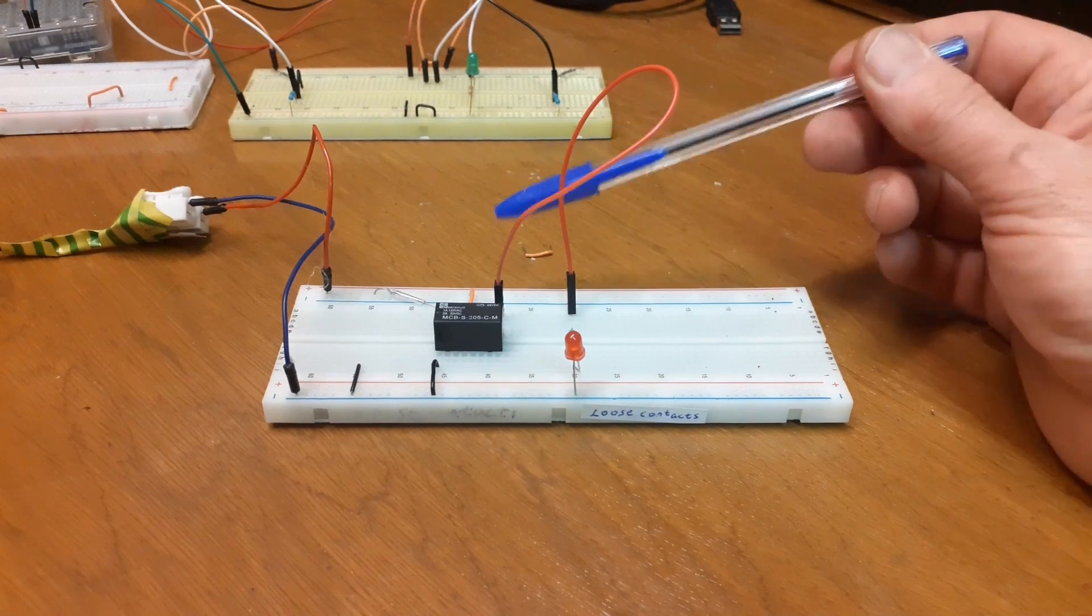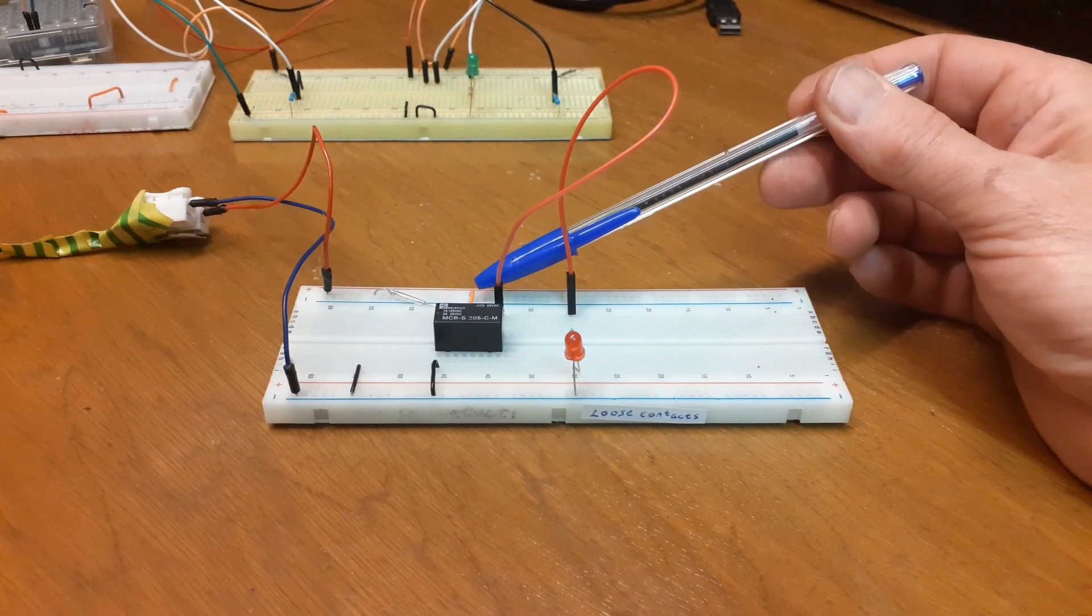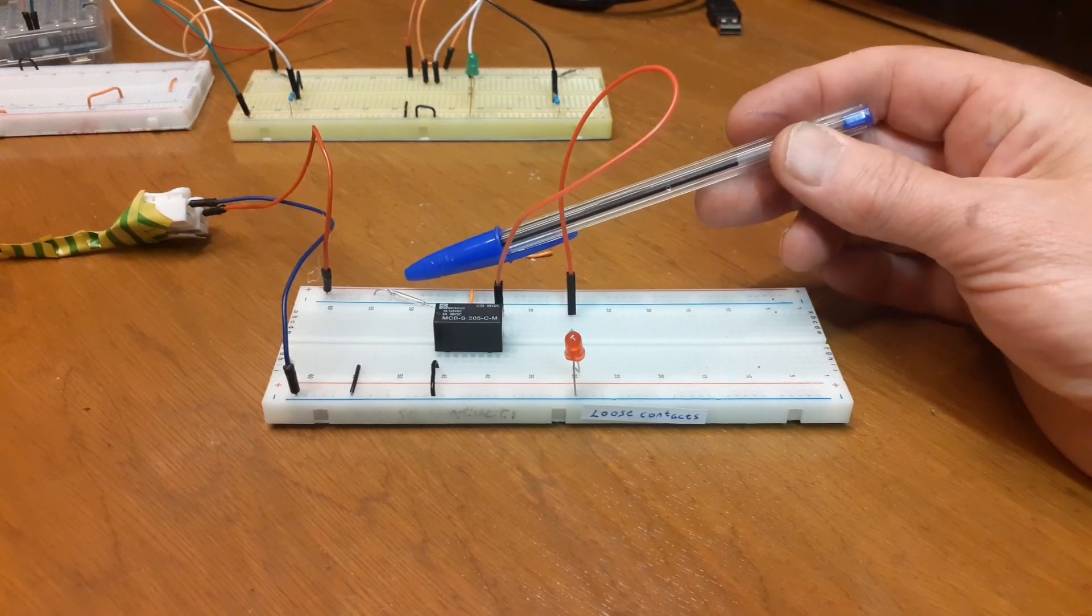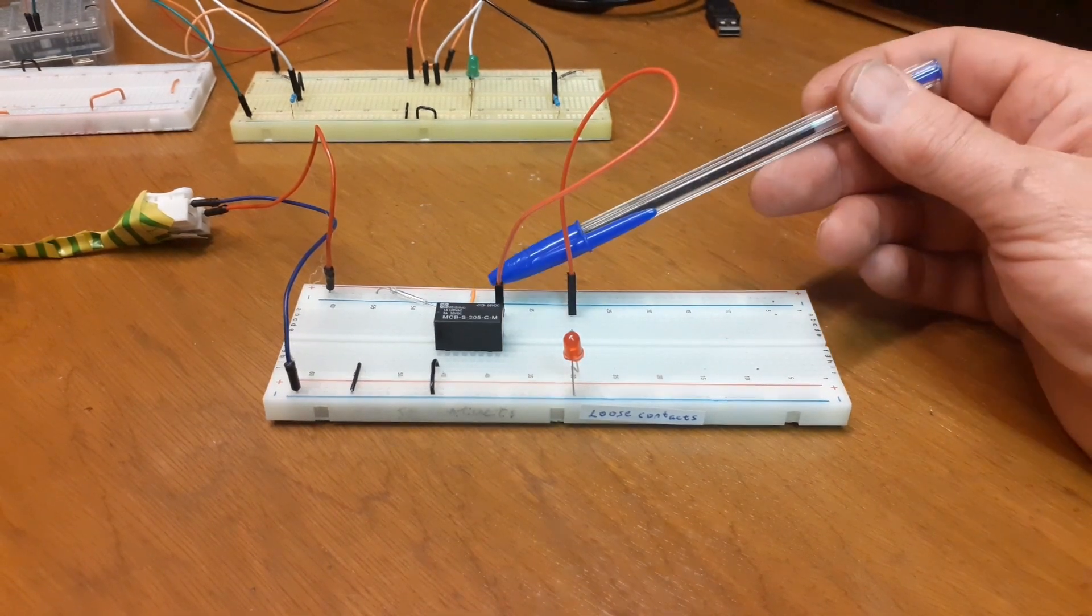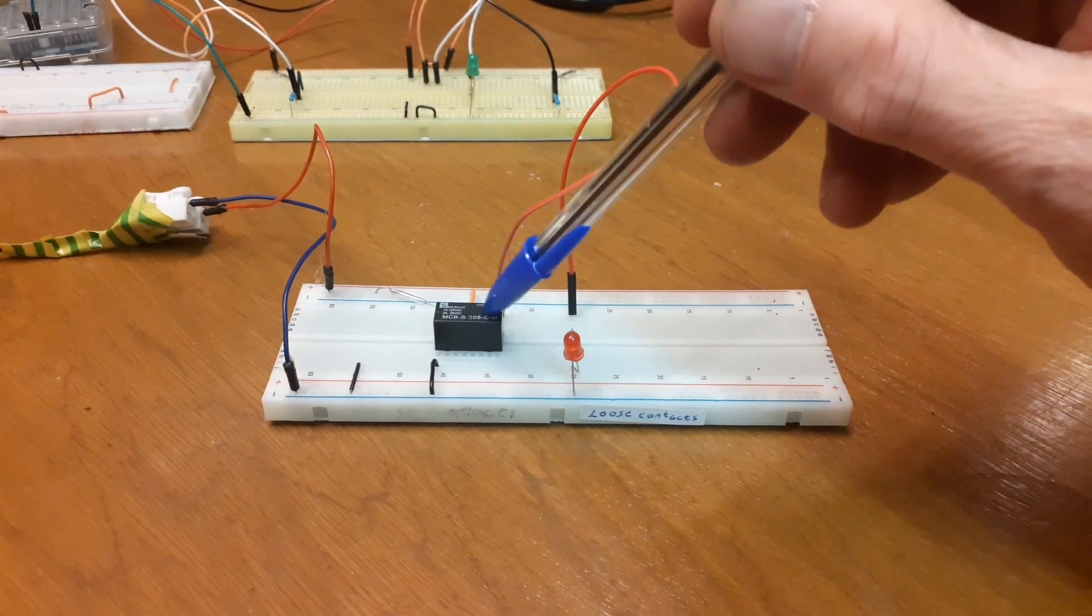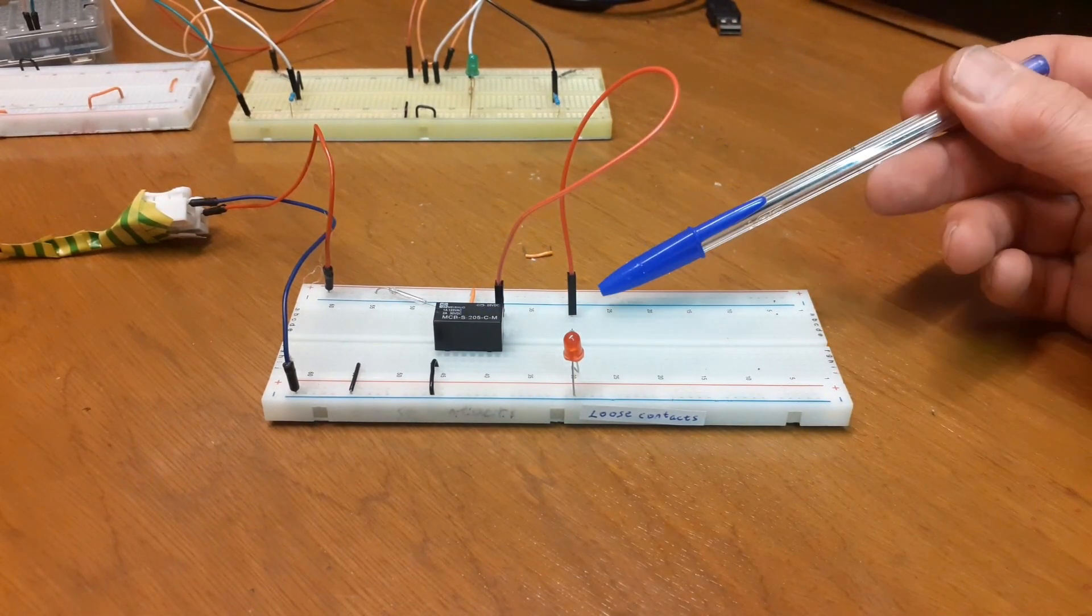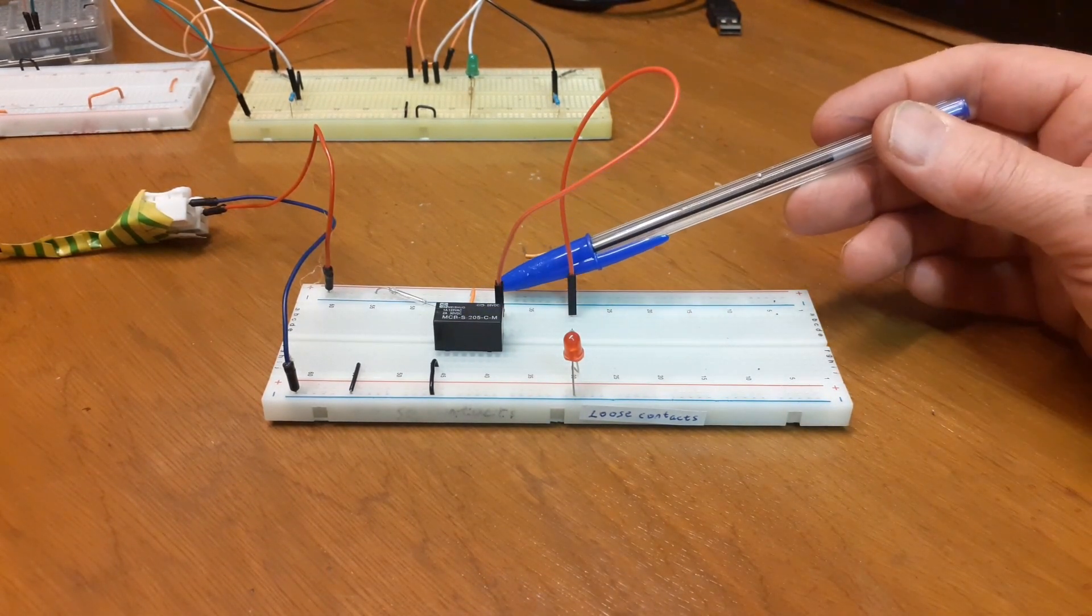Well, if we wanted to power something to turn something on and off a bit more powerful than just an LED, but we wanted to limit our power source into the reed switch, we could have a different voltage coming through the contacts of the relay to maybe drive a motor. We could have maybe 24 volts going through there on a separate circuit.